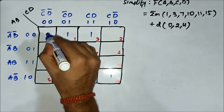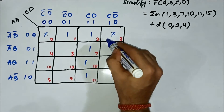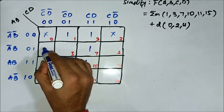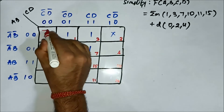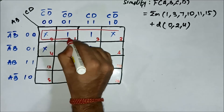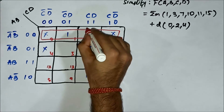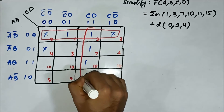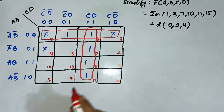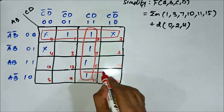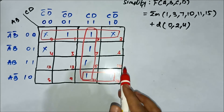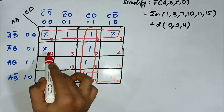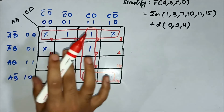The don't-care values are 0, 2, and 4. We can form a first quad, then a second quad, and then a pair. All the 1-marked cells have been covered. The X-marked cell — cell number 4 — is left behind; there is no need to form any group for it.